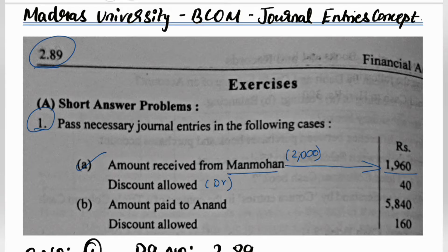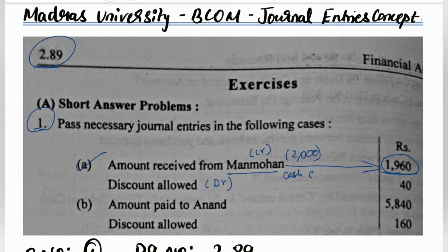Manmohan is the person who gives the amount, so he is the payer. He gives the amount to our company. Personal account golden rule: debit the receiver, credit the giver. Manmohan is the giver, so Manmohan account credit. Cash comes in, so cash account debit.